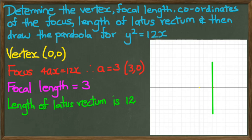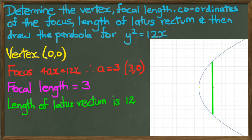Since a is equal to 3, the latus rectum is 12, and there you go, I've just sketched it right there. So my parabola has to go through the tip of those two lines and the yellow point, which is the vertex itself, and that's what it's going to look like. In the next example, I'll be looking at what happens when the vertex actually moves.